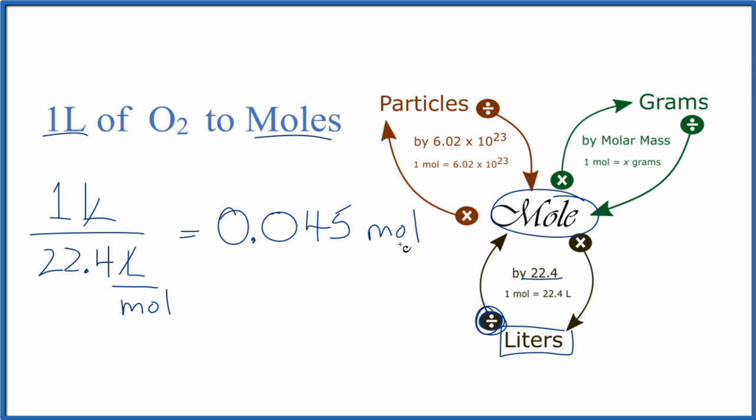We could also use conversion factors to do this as well. So we could start with our one liter, and we could multiply that by a conversion factor. Since we have liters up top, we want liters on the bottom. So we have our one mole is 22.4 liters, and that's our one mole.